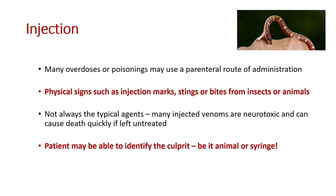Injection is another route — many overdoses or poisonings involve parenteral administration, IM or IV. But we're not always talking about illicit drugs. Spider and snake bites are also a type of injection injury — stings or bites from insects or larger animals can also constitute an injection overdose. Many injected venoms are neurotoxic and can cause death quickly if left untreated. In the UK this is rare, though dangerous snakes are kept in private residences, industrial settings, and zoos. The patient may be able to tell you: was it an animal or a syringe?